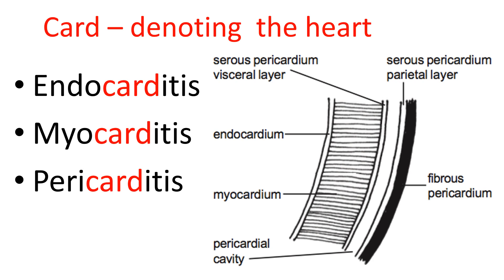The pericardium is actually in two or three parts: there's the serous pericardium, which is the visceral layer — sometimes called the epicardium — then the pericardial cavity, which is more or less a potential space, and then the serous pericardial layer and the fibrous pericardial sac on the outside, with lubricating fluid between the serous visceral and serous parietal pericardium. The "-itis" suffix means inflammation of, so endocarditis is inflammation of the endocardium, often caused by bacterial infection, and myocarditis is inflammation of the myocardium, typically a viral infection. Pericarditis can be a viral infection but can also occur after a myocardial infarct — there can be a sterile pericarditis.